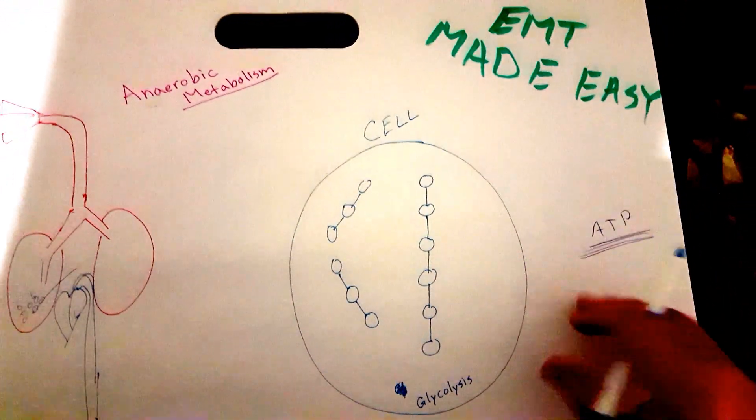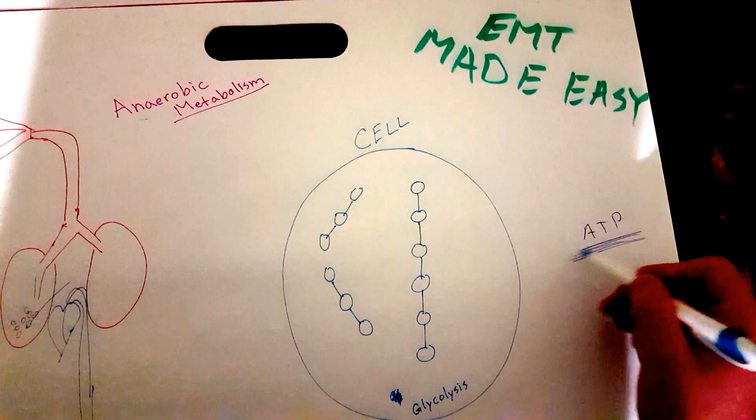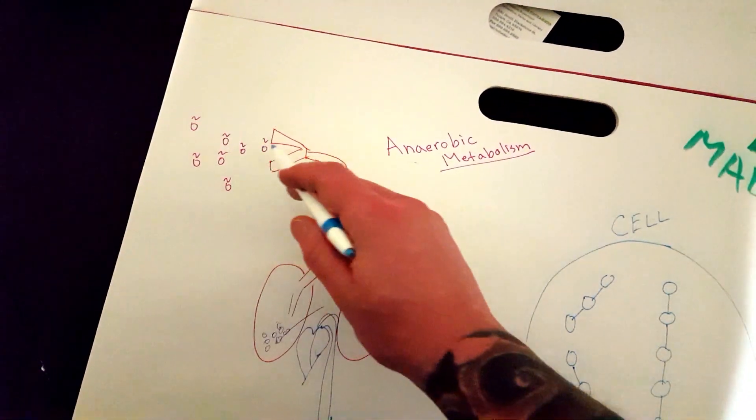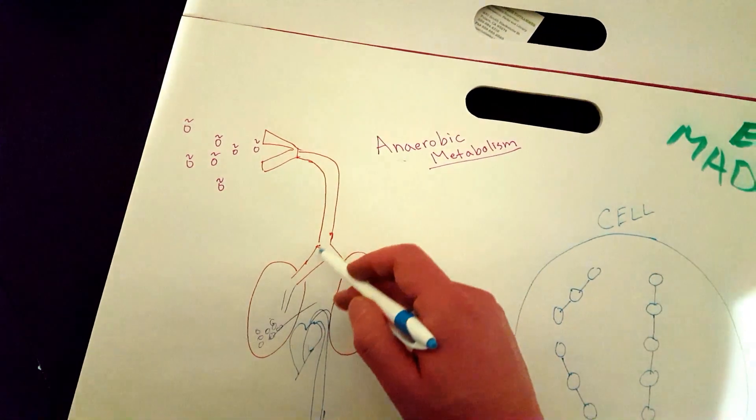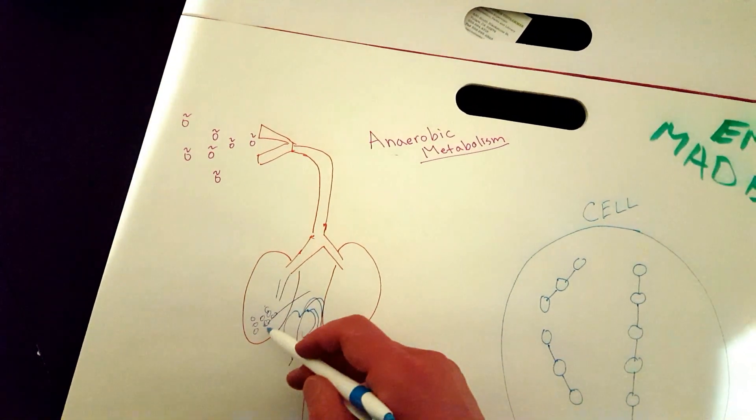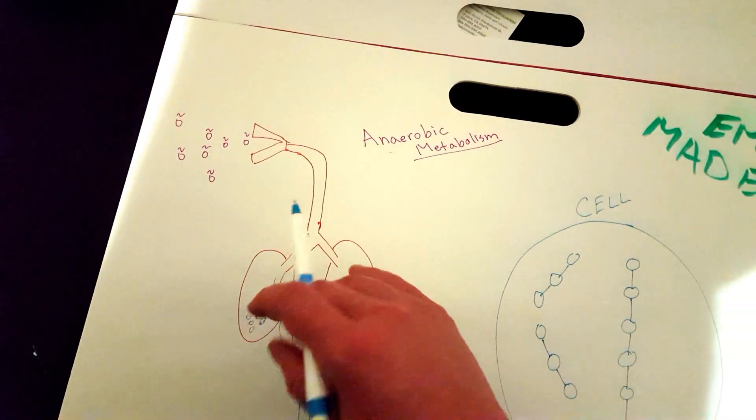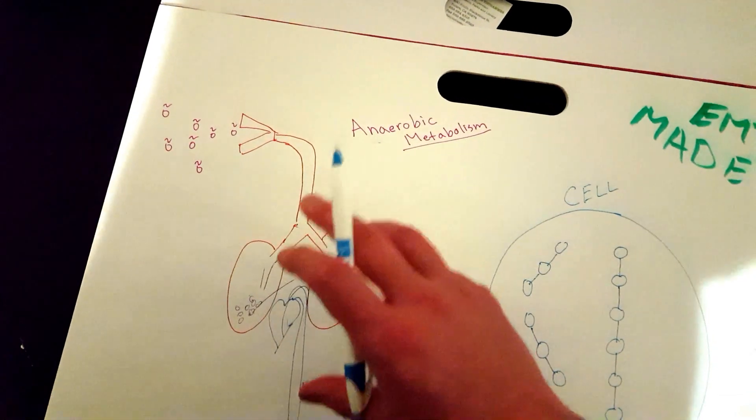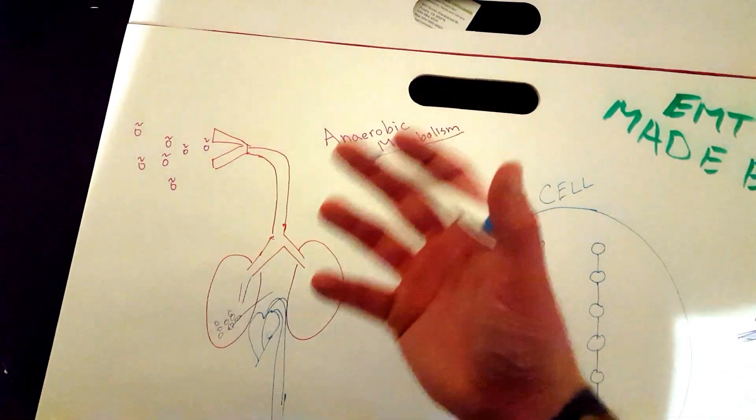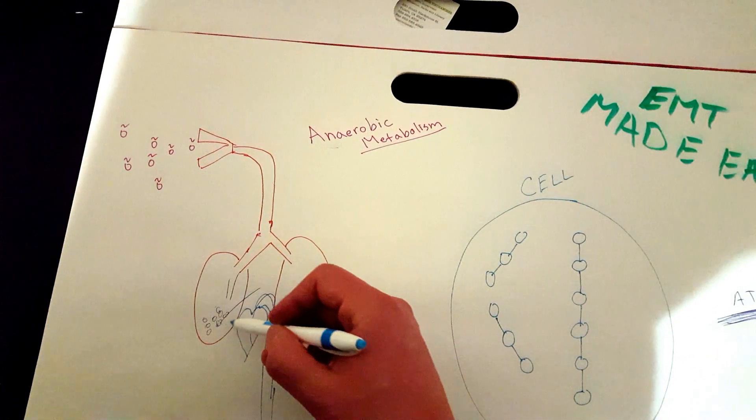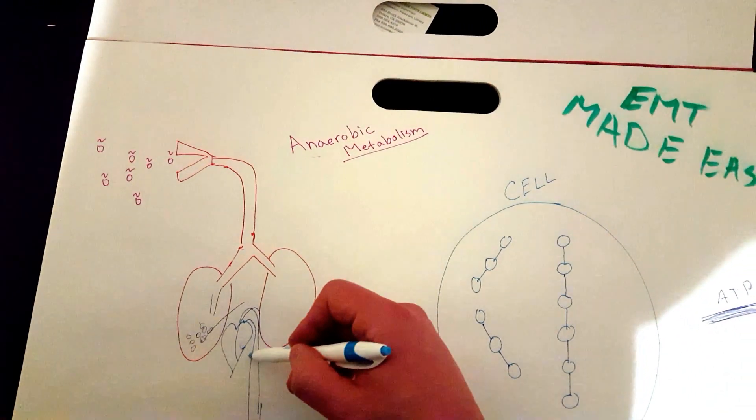Usually when we are making ATP, O2 will go through your airway down into your alveoli, and then the red blood cells inside the capillaries around your alveoli will take the O2 to the left side of your heart, and then the left side of your heart will pump it to the rest of your body.